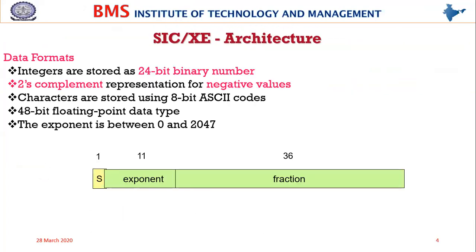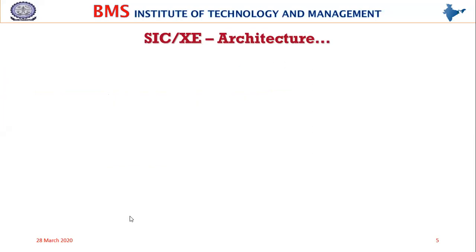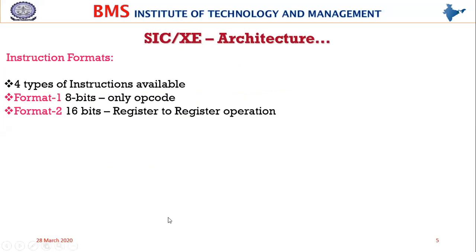There are integer data formats which are 24-bit, floating-point data format which is 48 bits, and 8-bit ASCII codes used for characters. These things are just a quick recap.